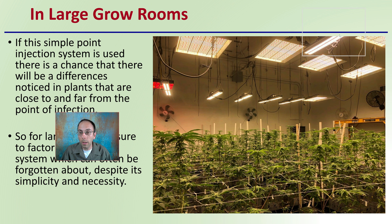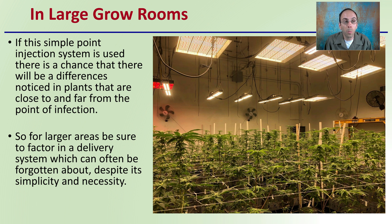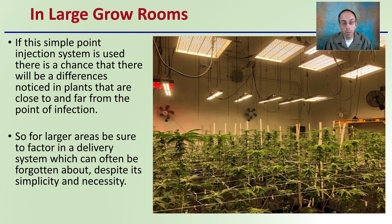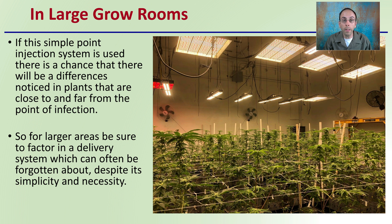In large grow rooms, as we can kind of see here, if this simple point injection system is used, there's a chance that differences will be noticed in the plants that are close to compared to those plants that are far from the point of injection. For large areas, be sure to factor in a delivery system, which can often be forgotten about despite its simplicity and necessity. You want to make sure all plants are getting equal distribution so you're getting an equal, consistent grow — not some that are much more aggressive and some that are much less, simply because you did not equally distribute your carbon dioxide.